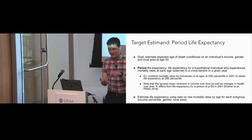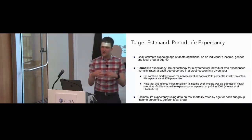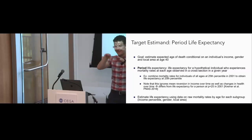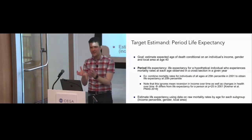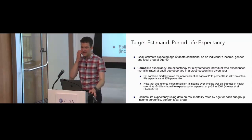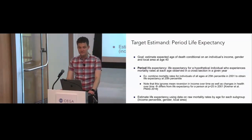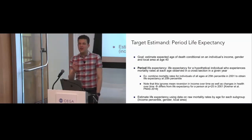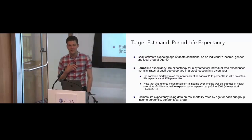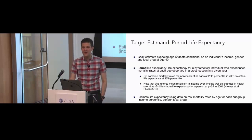We measure life expectancy at the state level, at the commuting zone level — which are aggregations of counties that correspond to local labor markets — and down to the county level. The challenge is the finer you go, the more places we lose because they don't have enough population to provide a precise measure of life expectancy. Not all commuting zones or counties have estimates because some are just very sparsely populated.